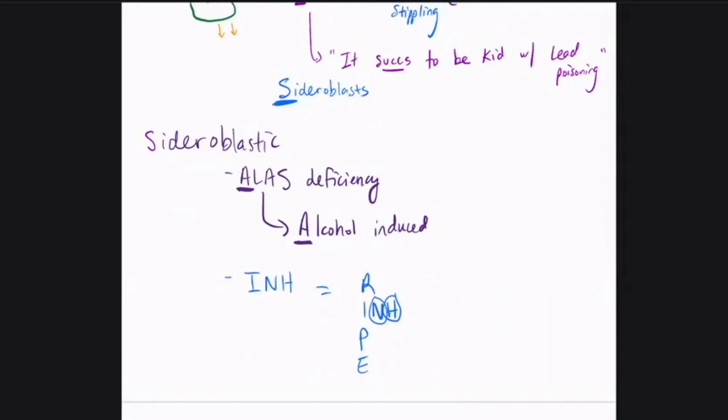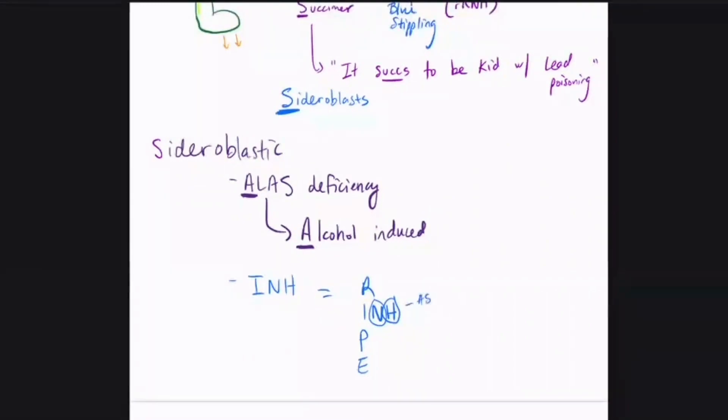So isoniazid can cause neuropathic symptoms such as peripheral neuropathies as well as hepatitis. It can cause an elevation in your AST and ALT, which are the enzymes inside your liver that get aggravated when you have hepatitis. And now you know that INH can also cause sideroblastic anemia.